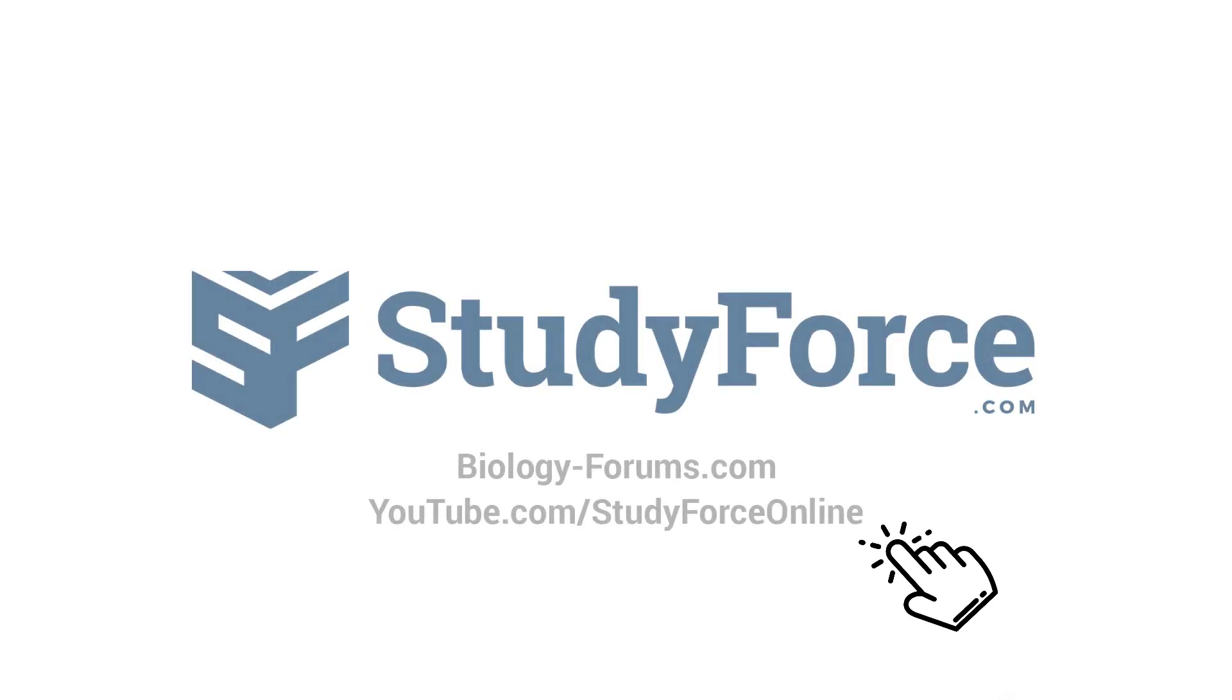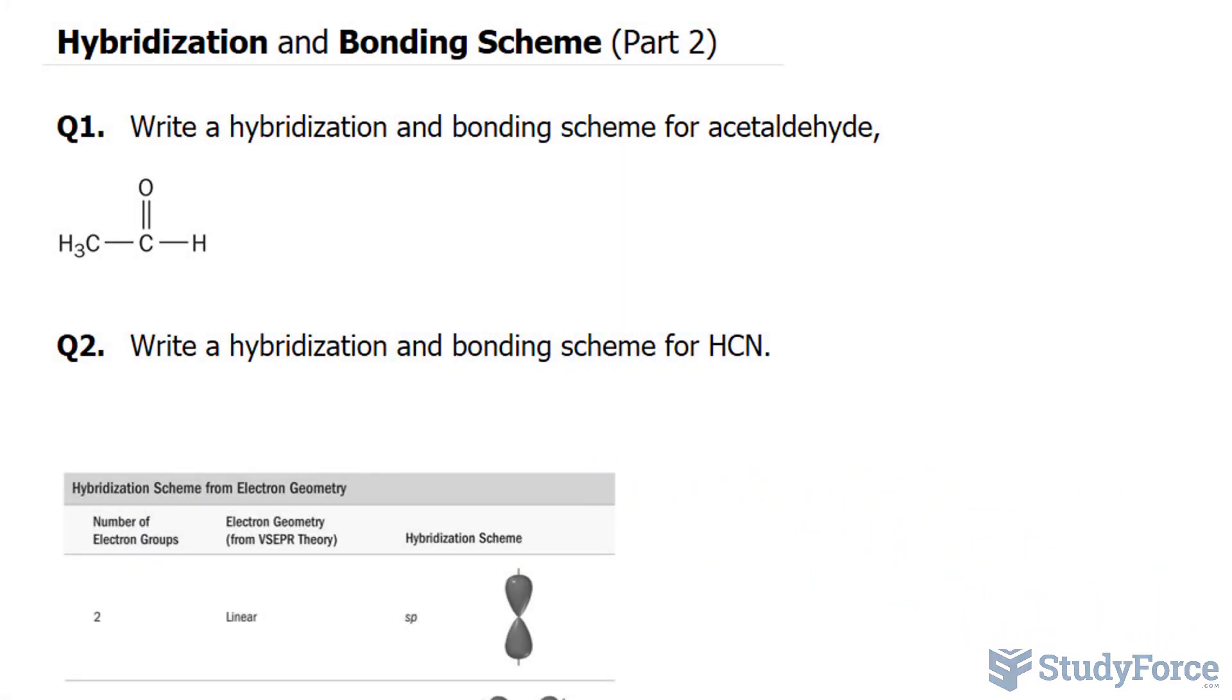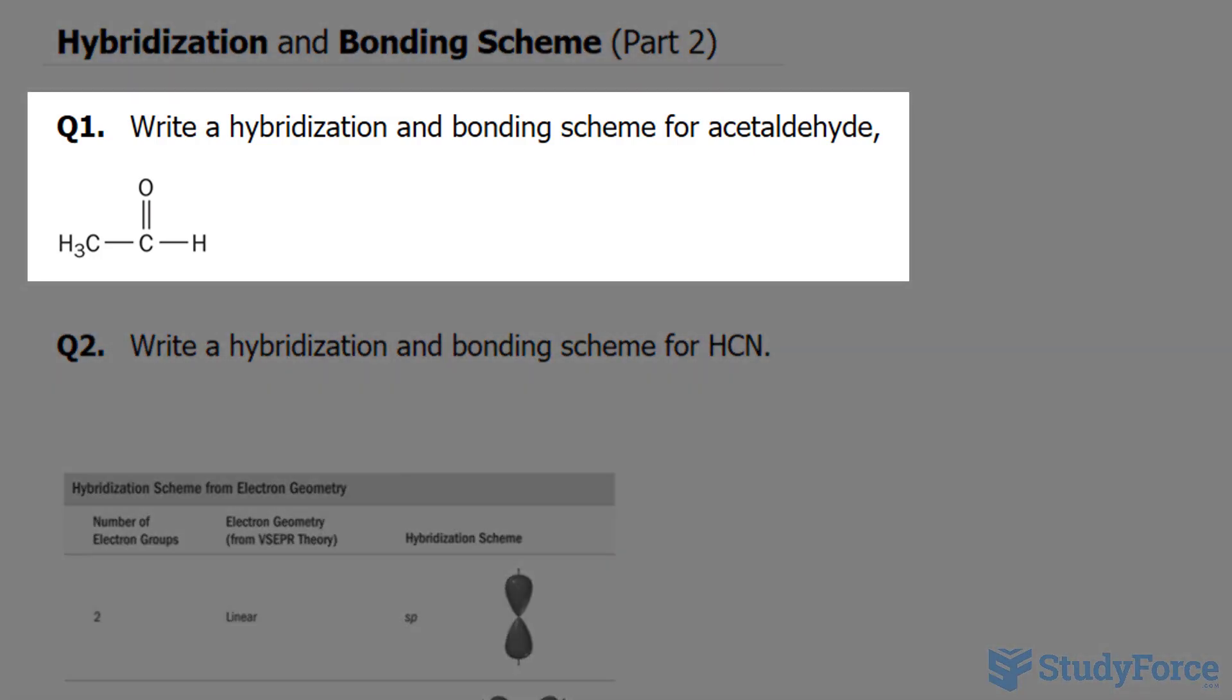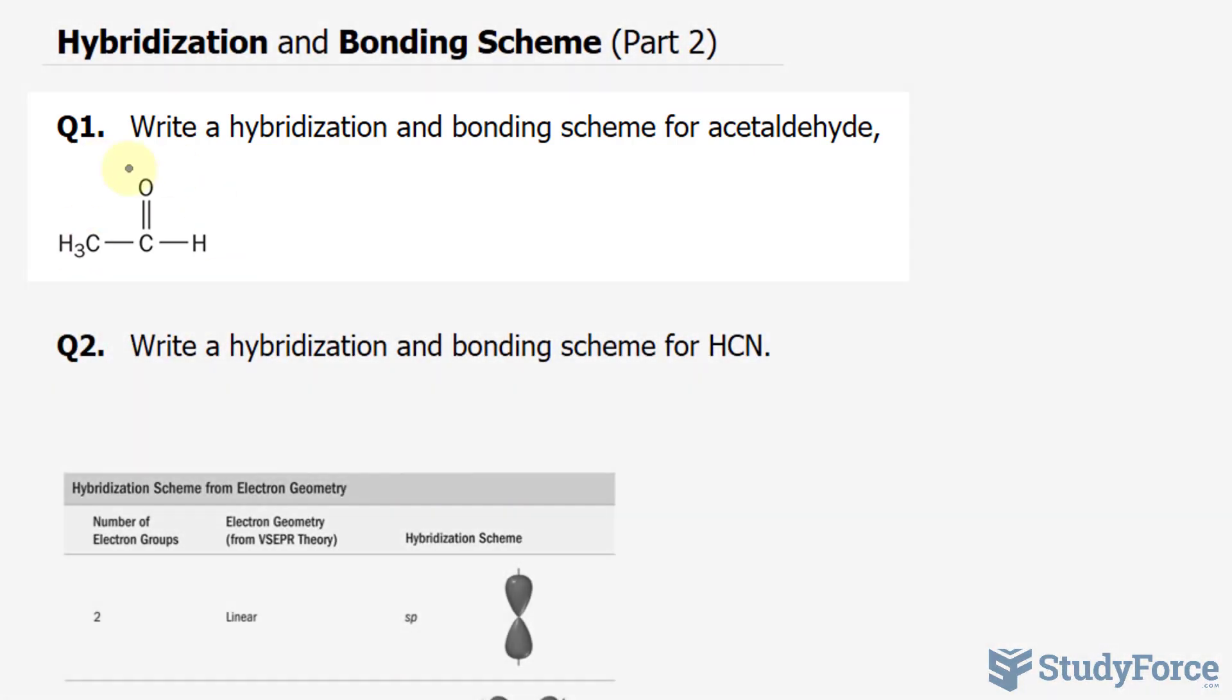In part two of this lesson, we'll be covering two more examples on hybridization and bonding scheme. Question number one reads: write a hybridization and bonding scheme for acetaldehyde, and its chemical structure looks like this.